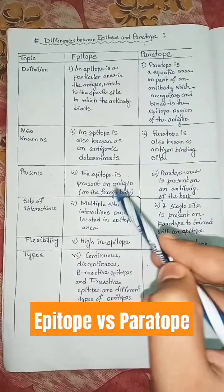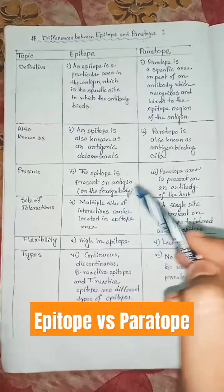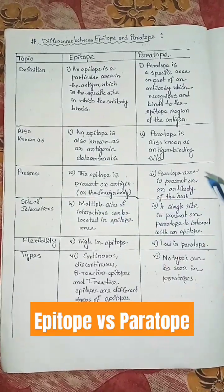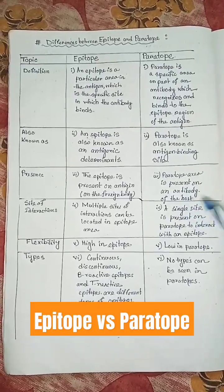The epitope is present on the antigen, on the foreign body. The paratope area is present on the antibody of the host.